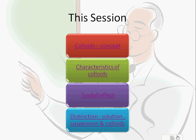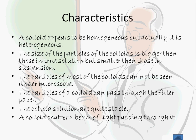After learning about the concept of colloids, let's understand the characteristics of colloids and how they differ from solutions and suspensions. First, a colloid appears to be homogeneous but is actually a heterogeneous mixture. Second, the size of particles in a colloid is bigger than those in a true solution but smaller than those in a suspension. Third, the particles of most colloids cannot be seen under a microscope. Fourth, the particles of colloids can pass through filter paper. Fifth, colloidal solutions are quite stable — the particles do not separate out on standing.